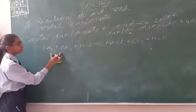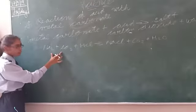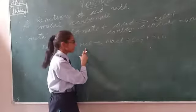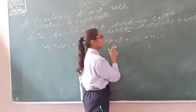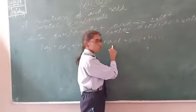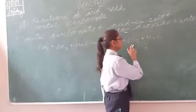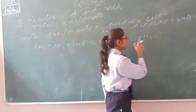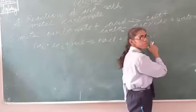Na2CO3 is metal carbonate. HCl is acid. NaCl is salt. CO2 is carbon dioxide. H2O is water.